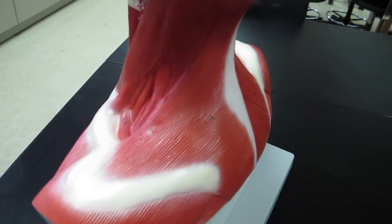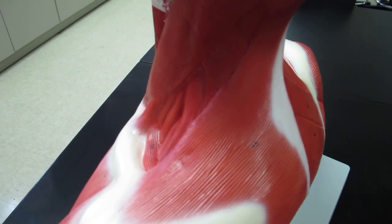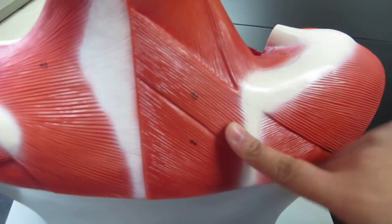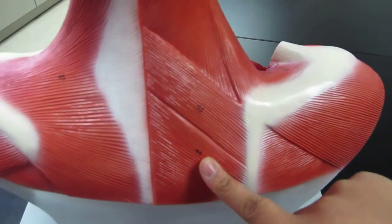That's the other one for the sternocleidomastoid. Forty-five is the trapezius, forty-seven is the deltoid. Forty-three and forty-four is rhomboid, but this is the minor, major.